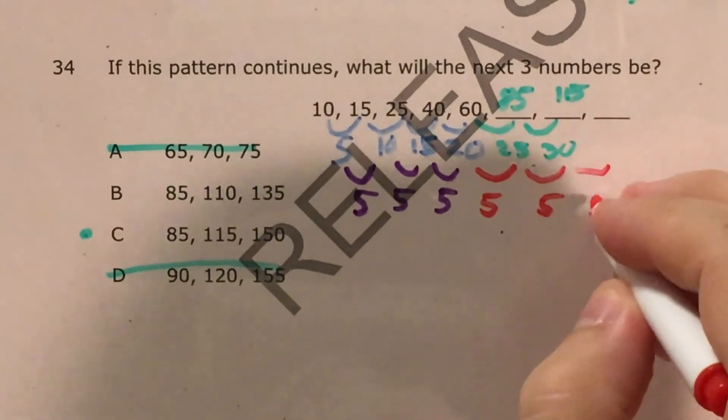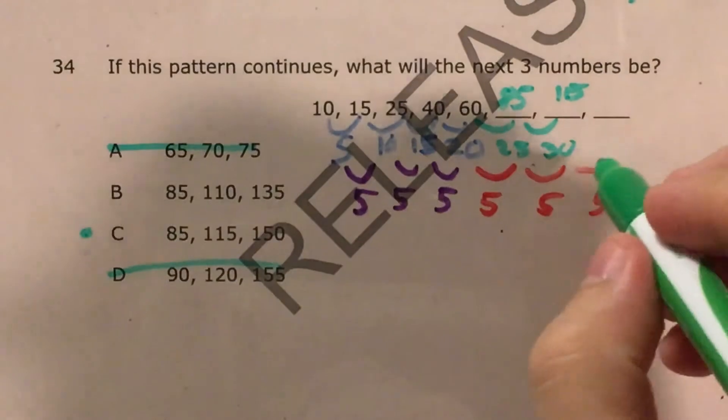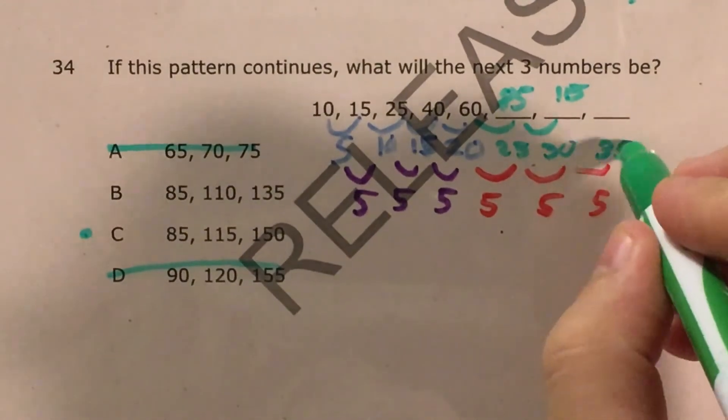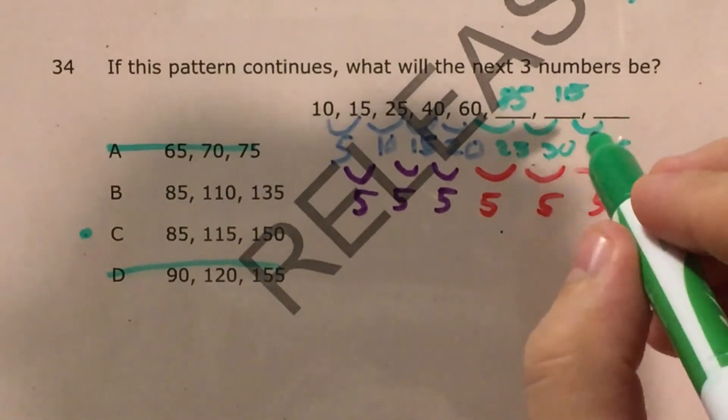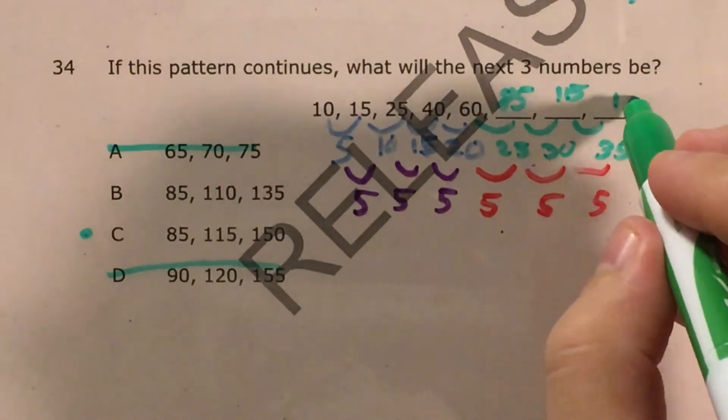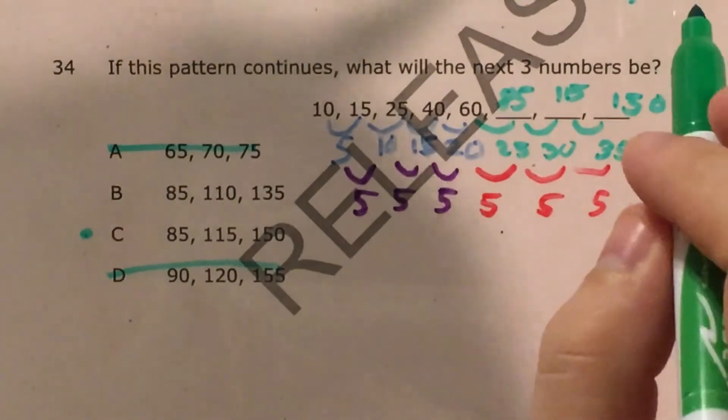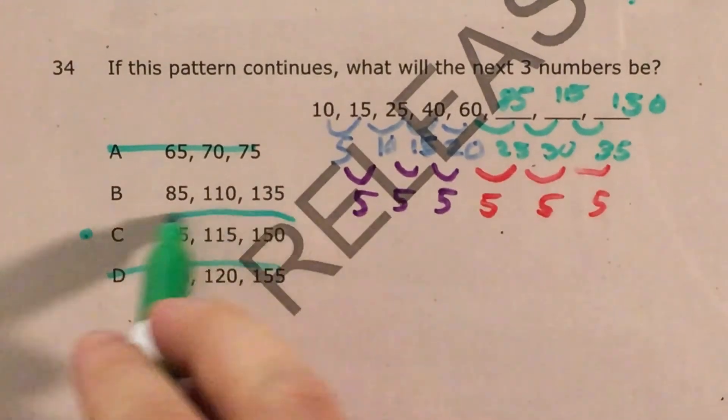So I continue the 5s pattern and get 35. I add 35 to 115. And okay, that's good. I get 150. That's what I'm looking for.